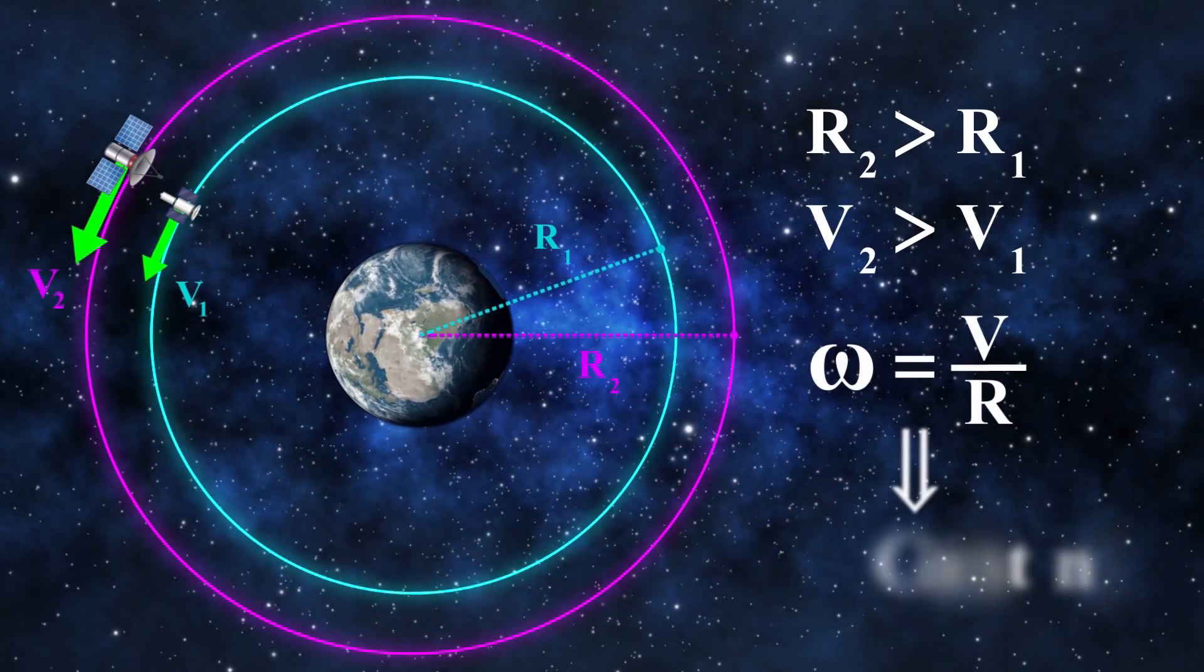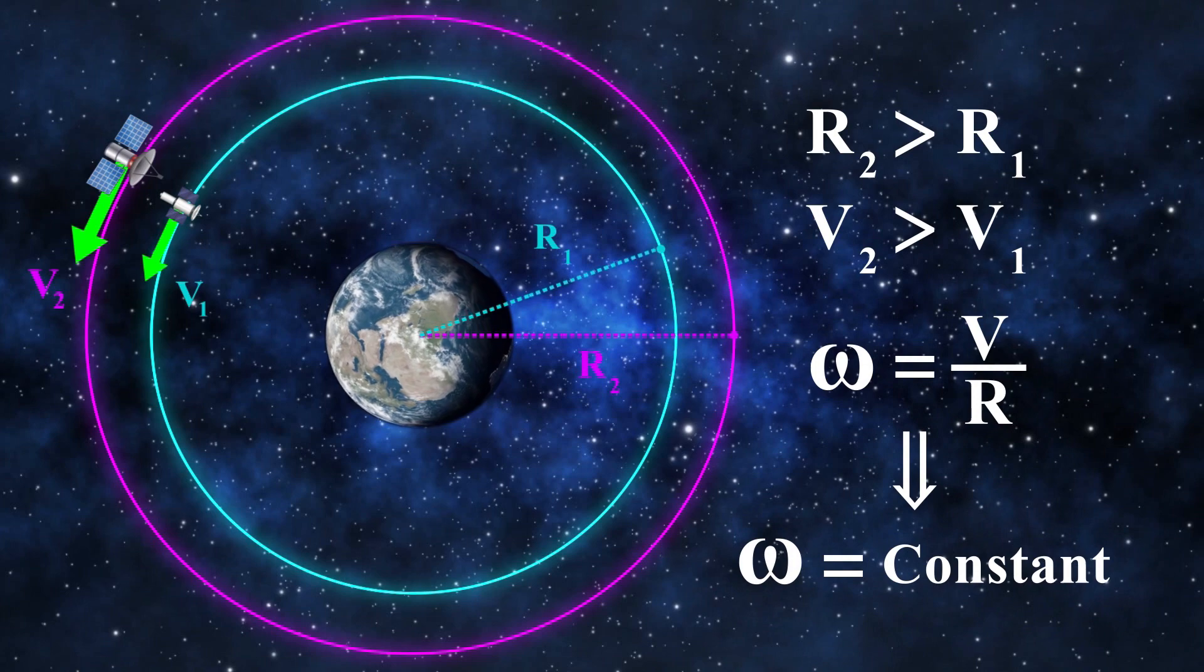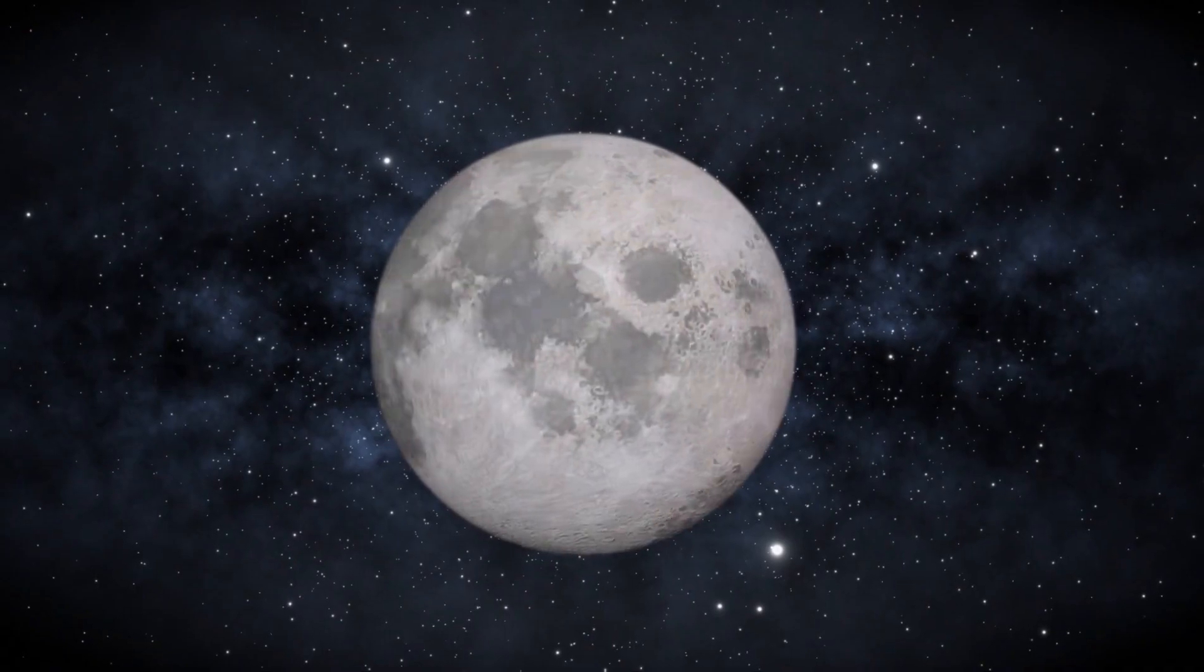Thus, the value of the speed divided by the radius of rotation, that is the angular velocity, remains invariable.